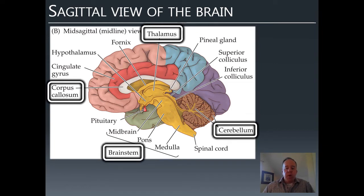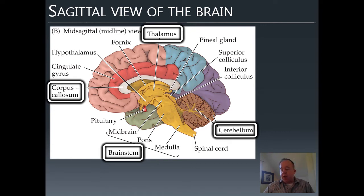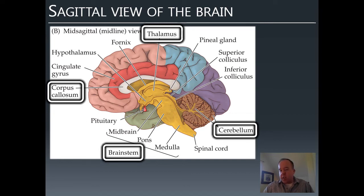The cerebellum is the very wrinkly structure on the posterior, ventral end of the brain. It deals with balance and coordination; fine motor movements depend on it critically. The cerebellum is also involved in classical conditioning—learning connections between different events. The brainstem has subparts and deals with basic functions—it keeps your heart beating and keeps you breathing. Brainstem injuries are far more likely to be fatal because it handles autonomic functions, those not under conscious control but vital for keeping you alive. It also contains structures involved in sleep-wake cycles.